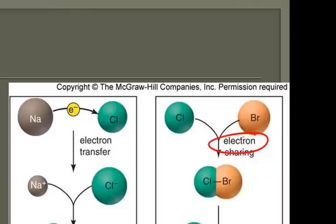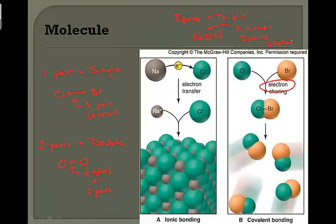Our last type would be three pairs, which would be a triple bond, like nitrogen bonded to nitrogen. Here, three lines means three pairs, meaning six total electrons.